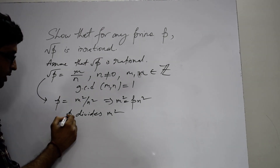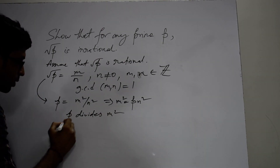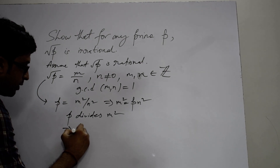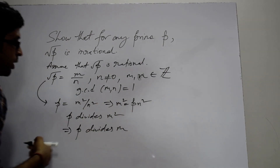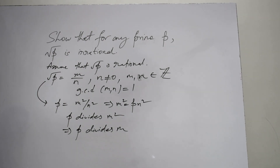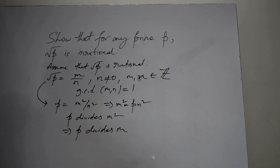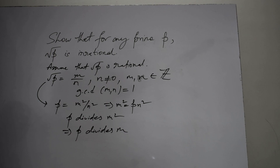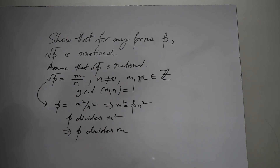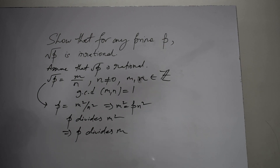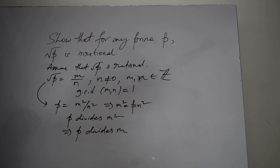Now since p is prime and p divides m squared, we can say that p divides m. This is an important property for any prime p: if p divides the square of any integer, then p will divide the integer itself. If you do not know the proof, follow the link in the description — I have provided the link for the proof of this particular property.